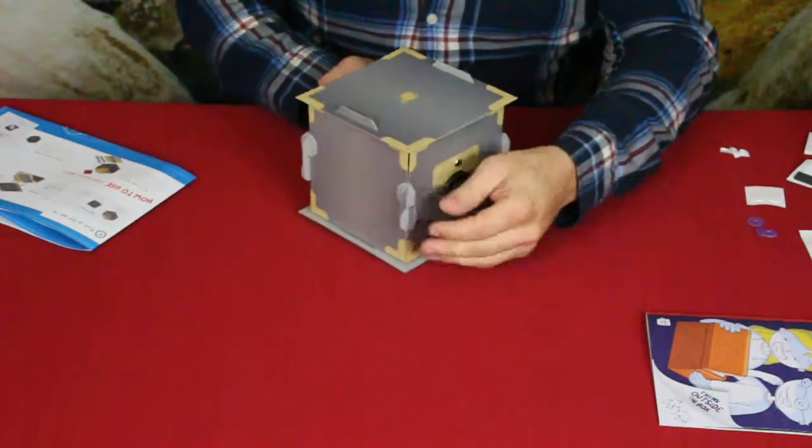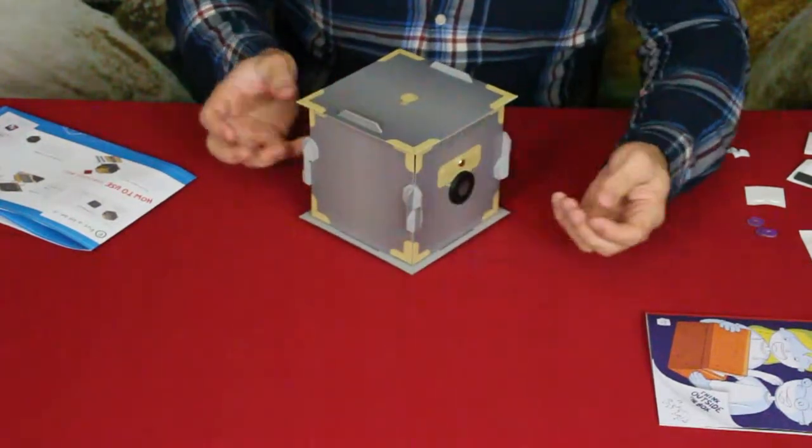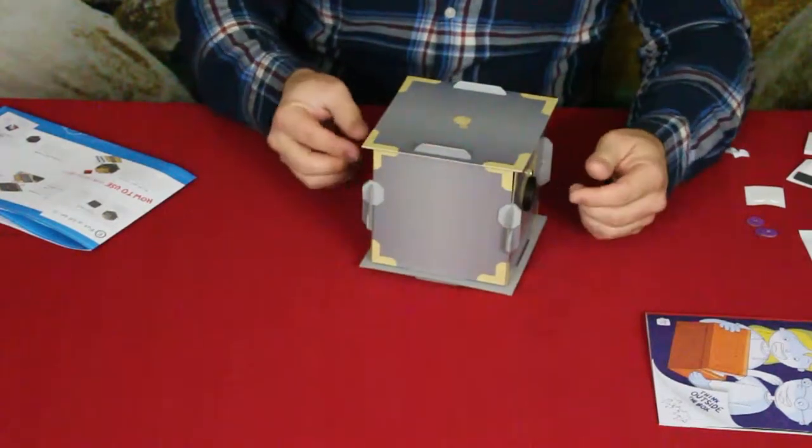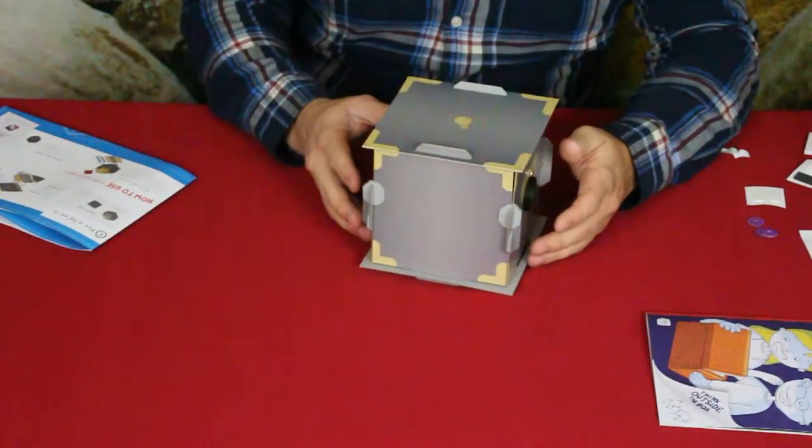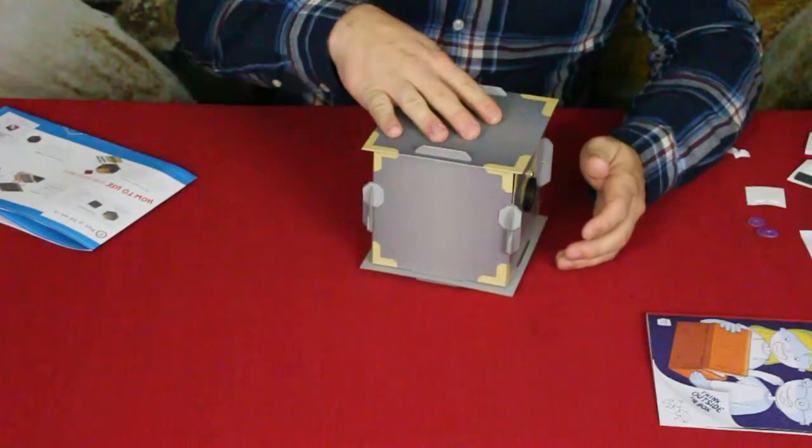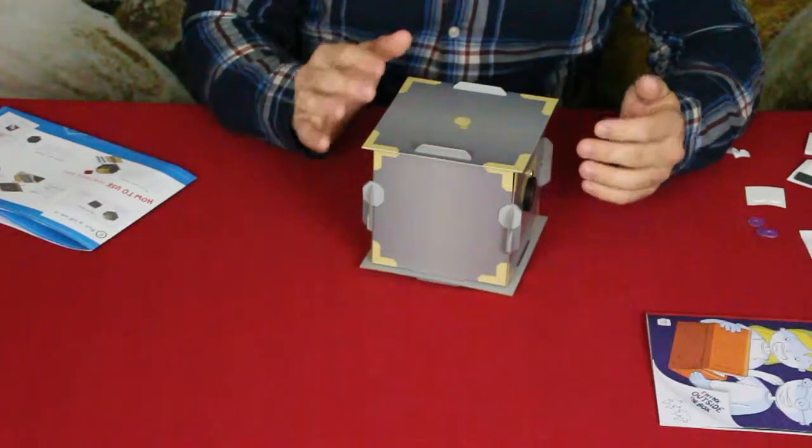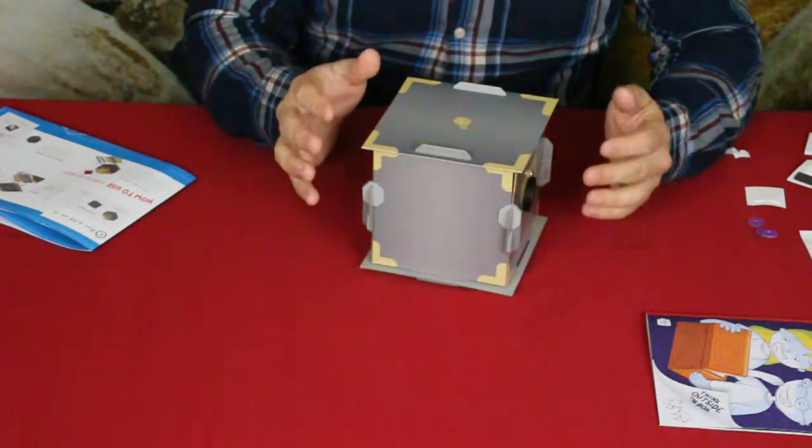I went ahead and left those there. You can of course take those off so that it doesn't really help give it away, but those are part of the locking mechanism. But then as you can see we did have some nails and those other plastic pieces in there, and those are actually part of a locking mechanism too. It's basically a two-part lock.